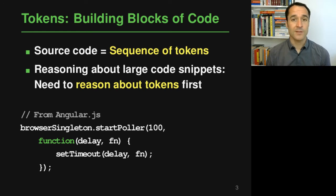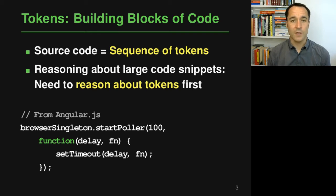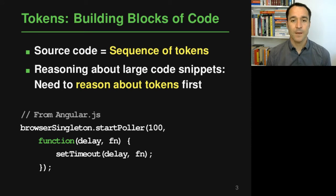One way of looking at source code — and that's the way we will mostly focus on in this module — is to consider source code as a sequence of tokens. We can think of tokens as the basic building blocks of code because basically every piece of code, no matter what programming language, is composed of tokens. So in order to reason about source code and larger code snippets, the first thing you always need to do is reason about individual tokens and have some way to represent them in a way that is suitable for neural networks or deep learning.